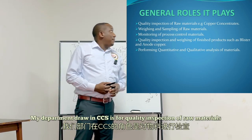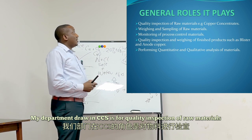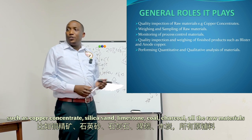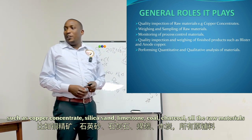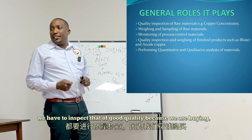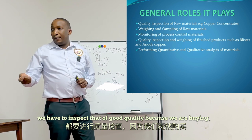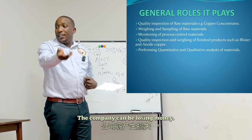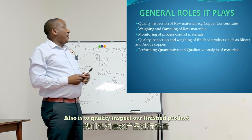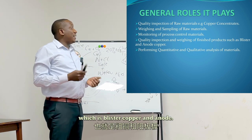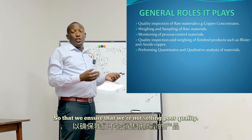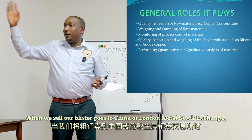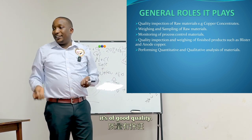My department's role in CCS is quality inspection of raw materials such as copper concentrate, silica sand, limestone, coal, and charcoal. We inspect all raw materials to ensure they are of good quality, because if we don't inspect them, the company could lose money. We also quality-inspect our finished products — blister copper and anode copper — to ensure we are not selling poor quality to China or the London Metal Exchange.